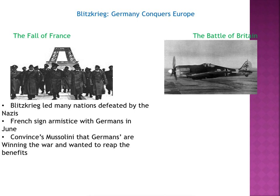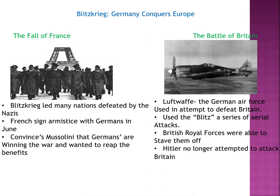This convinced Mussolini that the Germans were winning the war, and he wanted to reap the benefits, so he went on the offensive to acquire territory for Italy — territory he felt had been denied to them after World War I. As Germany gained land and acquired it into the Third Reich, the next engagement was with Britain. The Luftwaffe — the German Air Force — was used in an attempt to defeat Britain. Hitler knew a naval battle would be unsuitable and they would lose, so they used a lightning war, throwing bombs down on Britain.